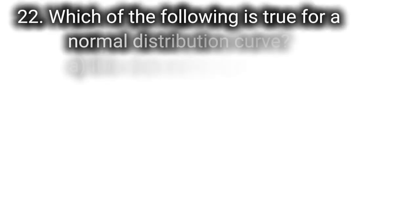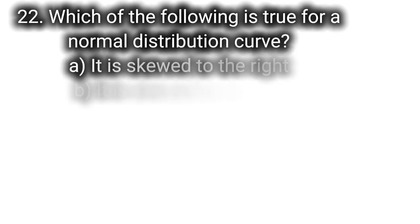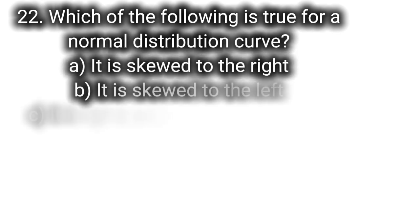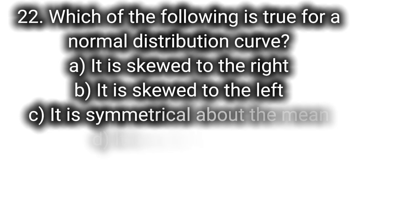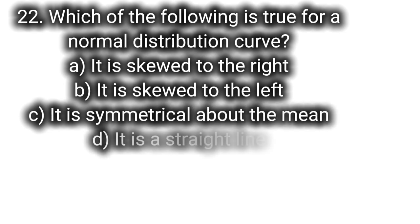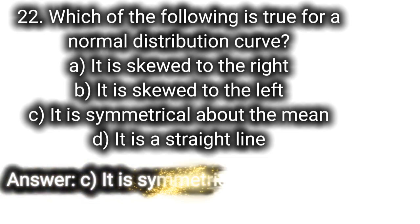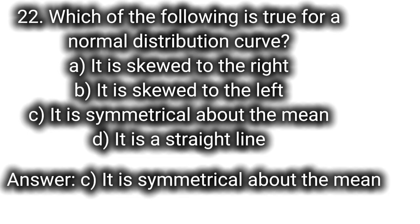Q22: Which of the following is true for a normal distribution curve? A. It is skewed to the right, B. It is skewed to the left, C. It is symmetrical about the mean, D. It is a straight line. Answer: C. It is symmetrical about the mean.